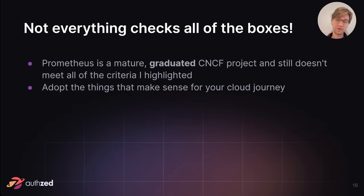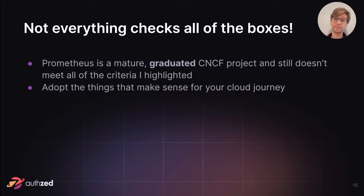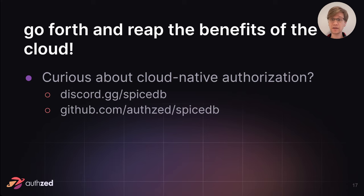In summary, I wanted to highlight Prometheus specifically to show that you can have a mature cloud native product that has been in the ecosystem from the beginning — a graduated CNCF project — that still doesn't really meet all the criteria we might draw as a hard line for taking full advantage of the cloud. The takeaway should be that not everything will fit some definition of perfect, but you need to adopt the things that make the most sense and align with the most value principles of your cloud adoption journey. If you're interested in what cloud native authorization looks like, join our Discord at discord.gg/spicedb or check out our GitHub at github.com/authzed/spicedb. Thanks.